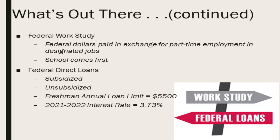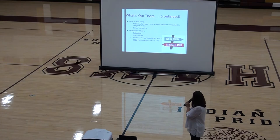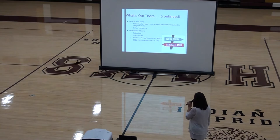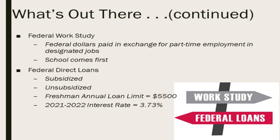Federal work-study is a job students get on campus. If they're eligible, it's not a guaranteed job — they're told that if they find a job on campus, they can be paid those funds. It's a part-time job; they're only allowed to work up to 20 hours a week. School comes first — students cannot work during school time, which is actually a federal regulation, though most schools will be pretty flexible.